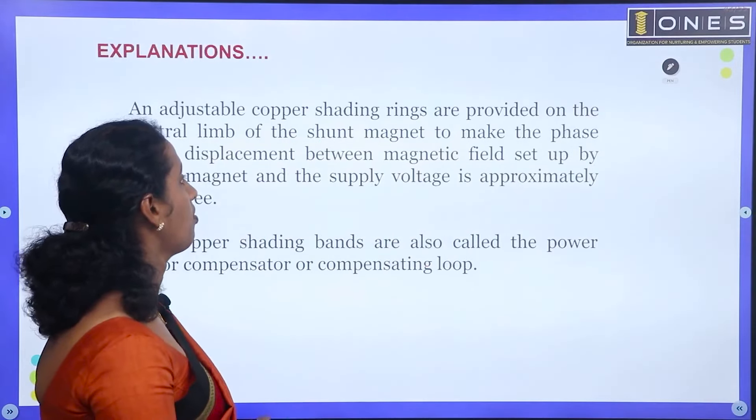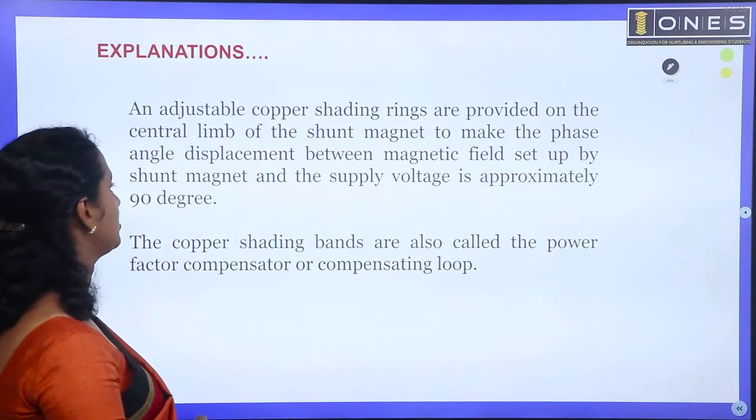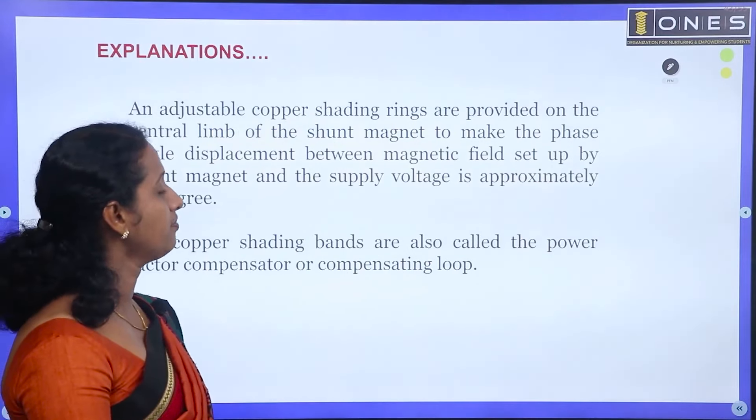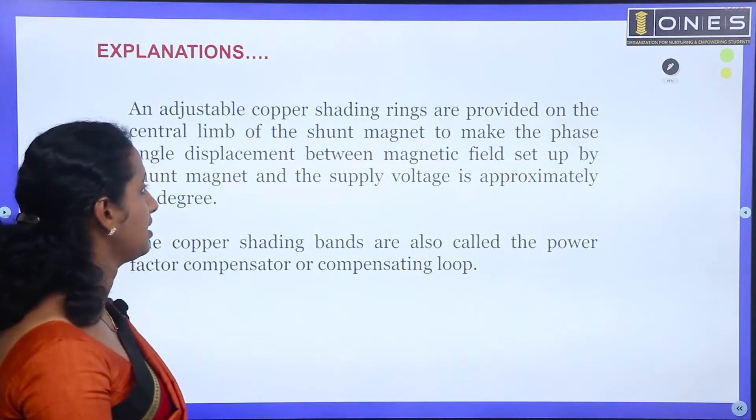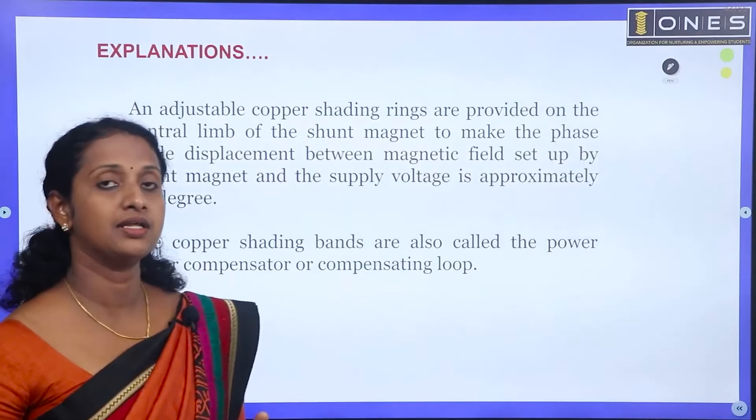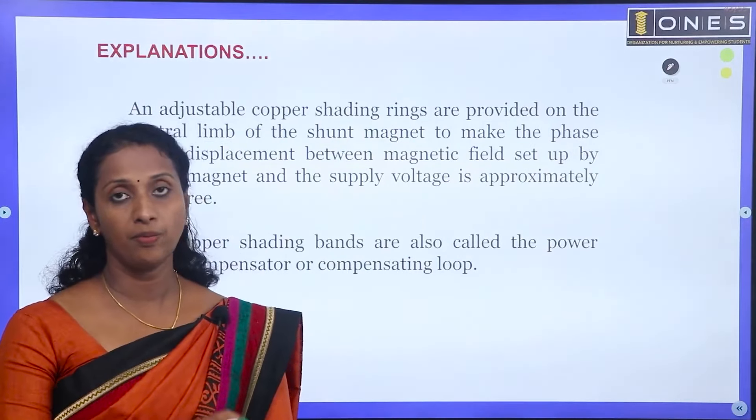Adjustable copper shading rings are provided on the central limb of the shunt magnet to make the phase angle displacement between magnetic field set up by the shunt magnet and the supply voltage approximately 90 degrees. The magnetic field angle is set at 90 degrees with the copper band.